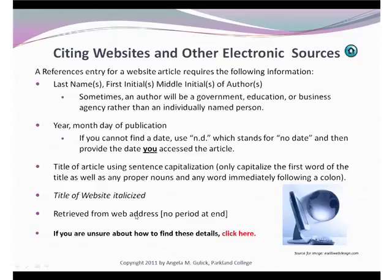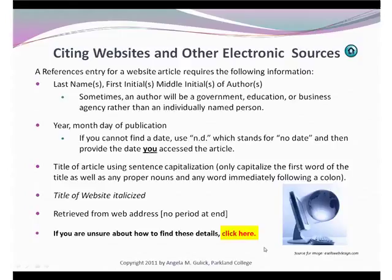Here's a list of details that you need to provide when you document a website article. First, you always look for author information — one author, several authors. Sometimes an author can even be a group, like a government agency or a school. Next, you want to look for the most specific date information you can find. If you can't find any date at all, you're going to use the letters ND, which stand for no date, and then you're immediately going to provide the date you found the article. Next, you'll provide information about the title of the article using something called sentence capitalization, and I'll talk about that in a bit. The title of the website italicized. And finally, retrieved from, and you'll provide the web address. If you're not sure how to find some of these details on a typical website, you might want to click this link right here and check out this video. Sometimes, to be very honest with you, it can be quite tricky to find all this stuff.